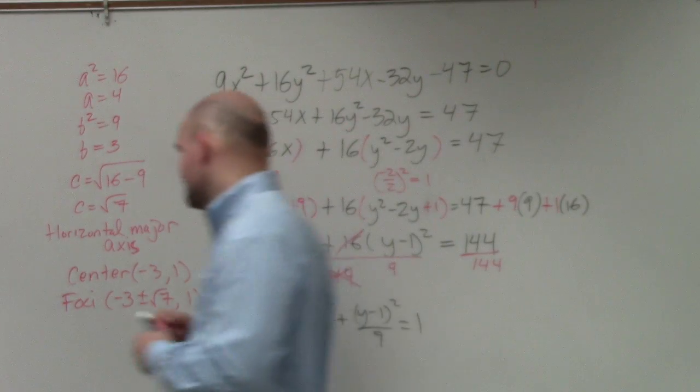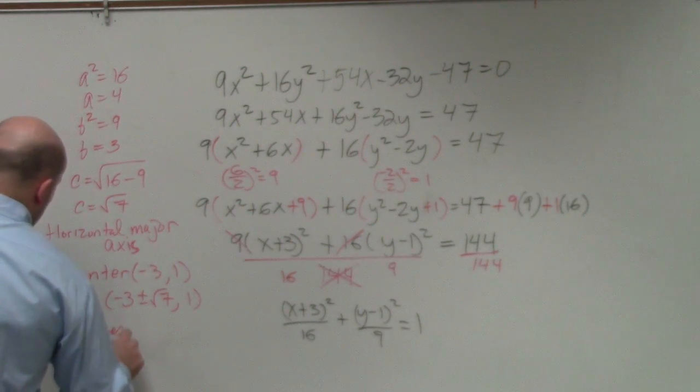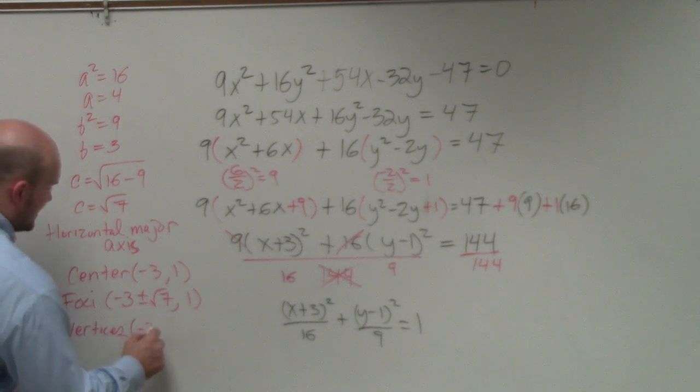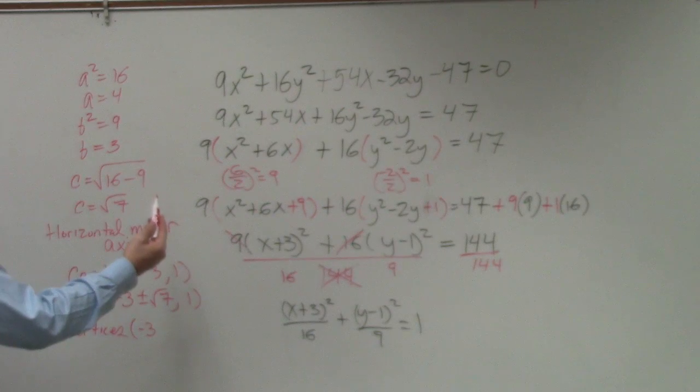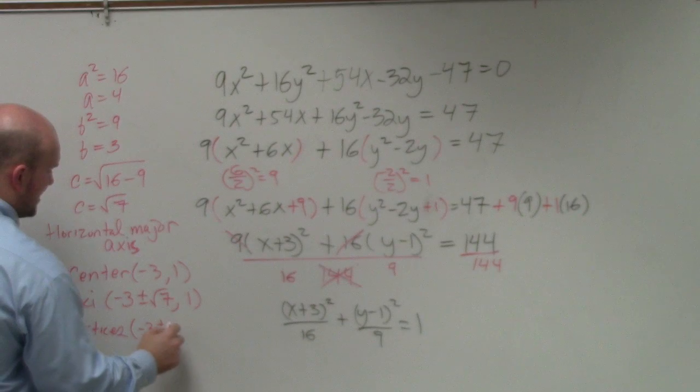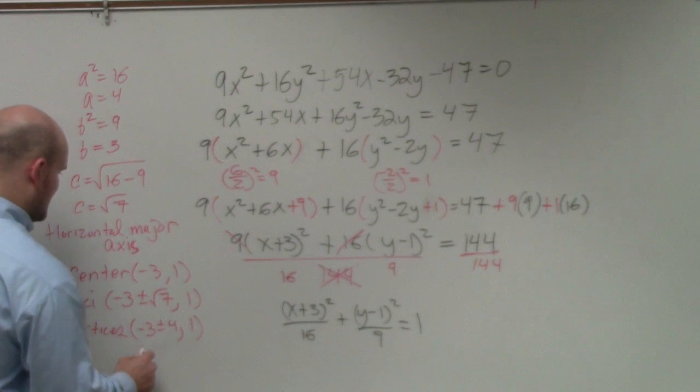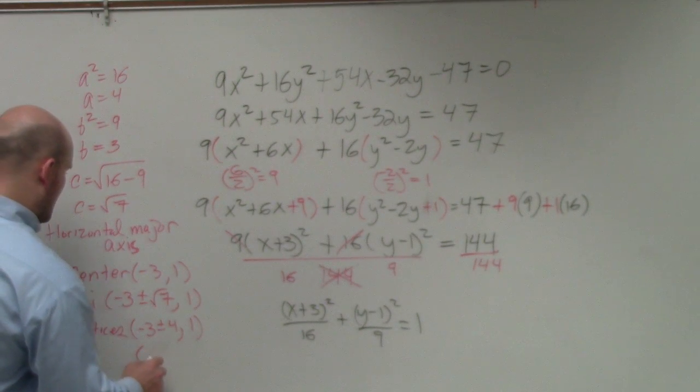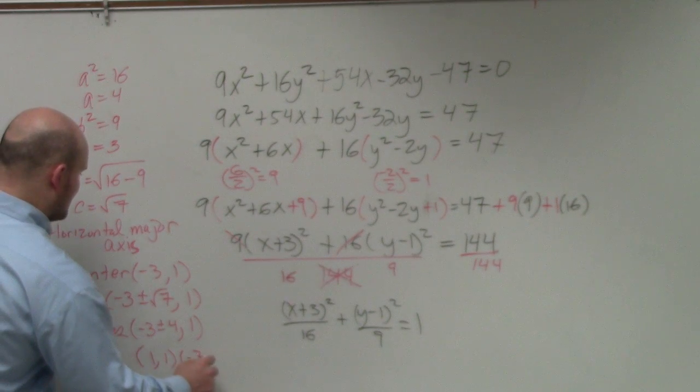For the vertices, again, that's going to be negative 3 plus or minus the distance from the center to your vertices is what? A. So that's going to be 3 plus or minus 4 comma 1. Now, obviously, this we can write out, right? So hopefully, you guys would see that this one is going to be 1 comma 1 and negative 7 comma 1.